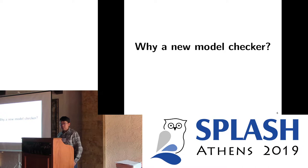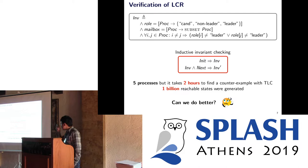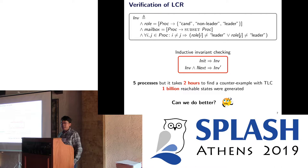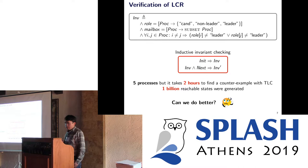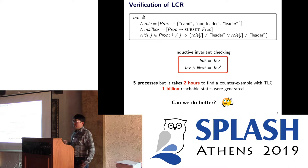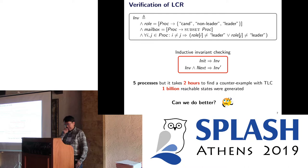TLC is quite good as a model checker, so why do we need a new model checker? Here is an interesting property — it captures type information of variables. There should be no duplicates in a ring, and we want to check whether this property is an inductive invariant in the LCR algorithm. That means two things must hold: it must be satisfied in the initial state and it must be preserved by the transition formula.